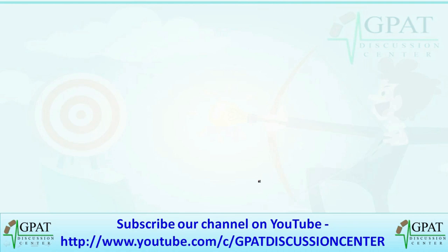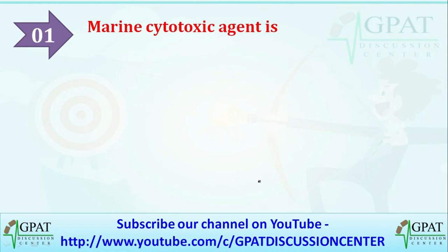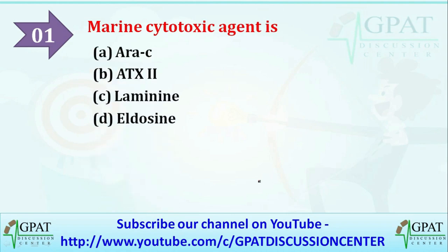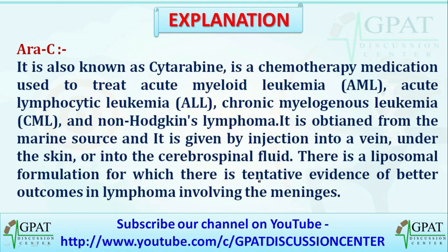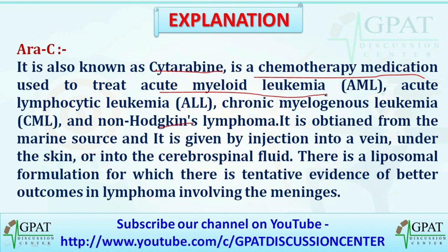Our first question is: marine cytotoxic agent is — options are Arabinoside, ATX2, Laminine, or Aldocene. The correct option is Arabinoside. It is also known as Cytarabine. It is a chemotherapy medication used to treat acute myeloid leukemia, acute lymphocytic leukemia, or chronic myelogenous leukemia.